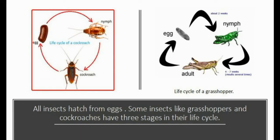All insects hatch from eggs. Some insects like grasshoppers and cockroaches have three stages in their life cycle. The baby insect that comes out of the egg is called a nymph. It looks very similar to the parent. After molting many times it changes into an adult. Molting is the shedding of old skin or shell.